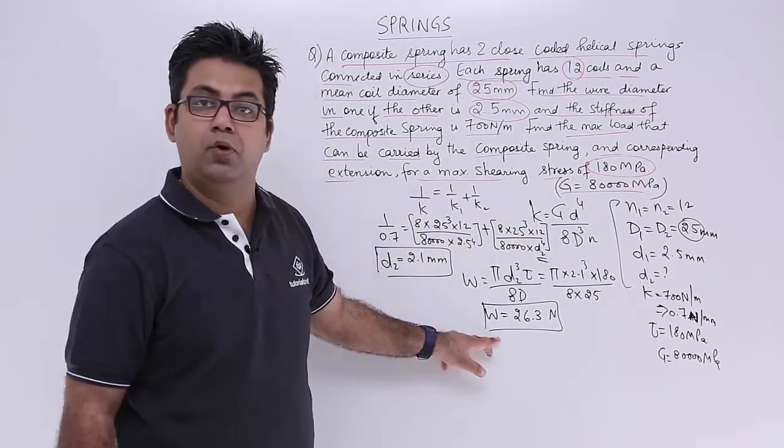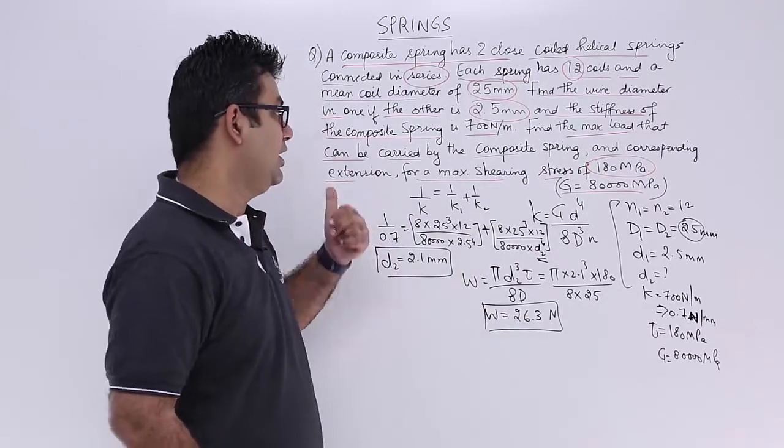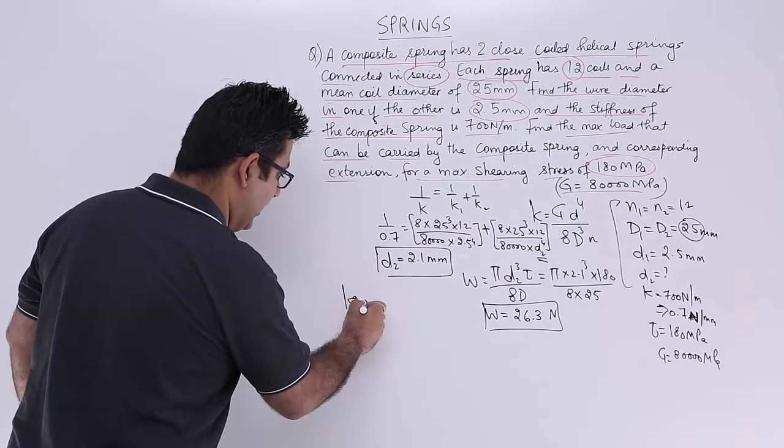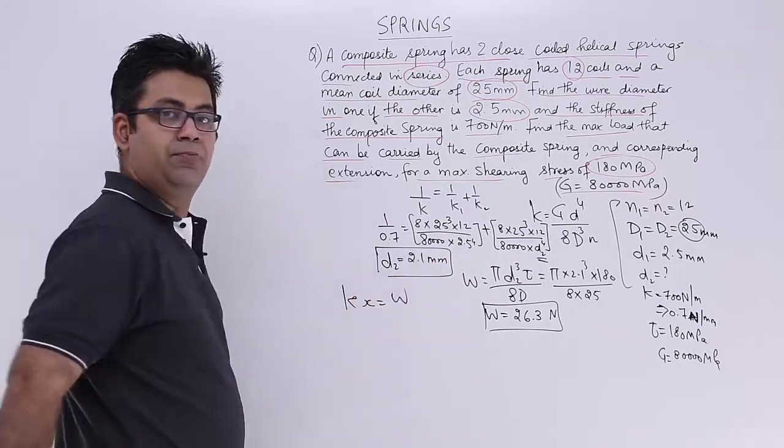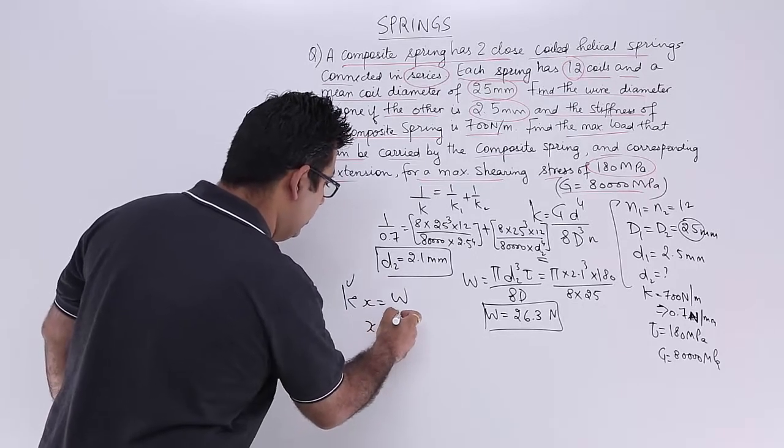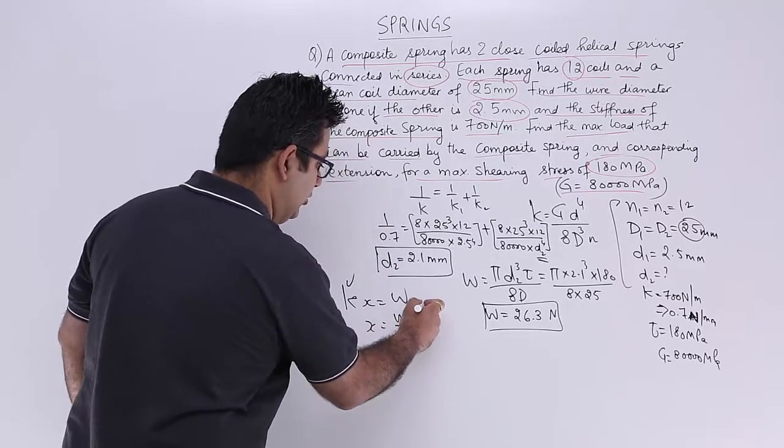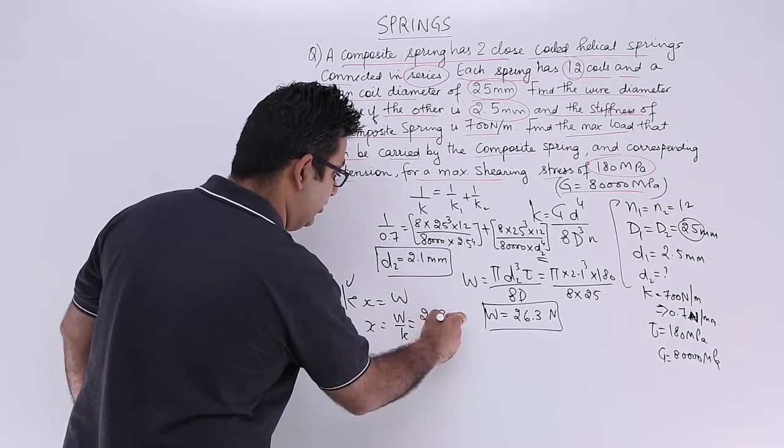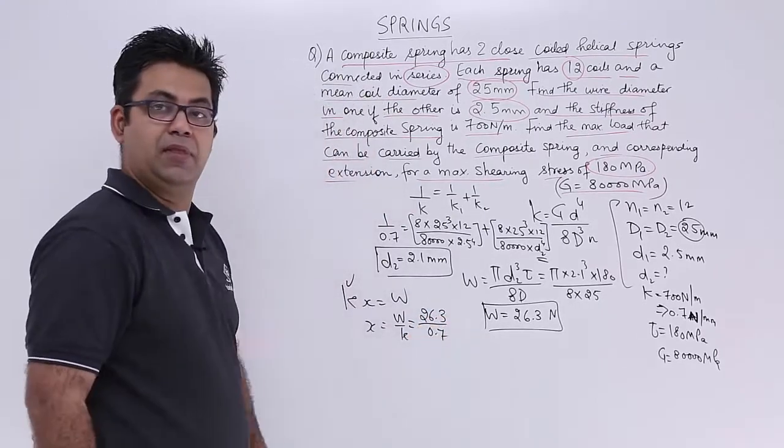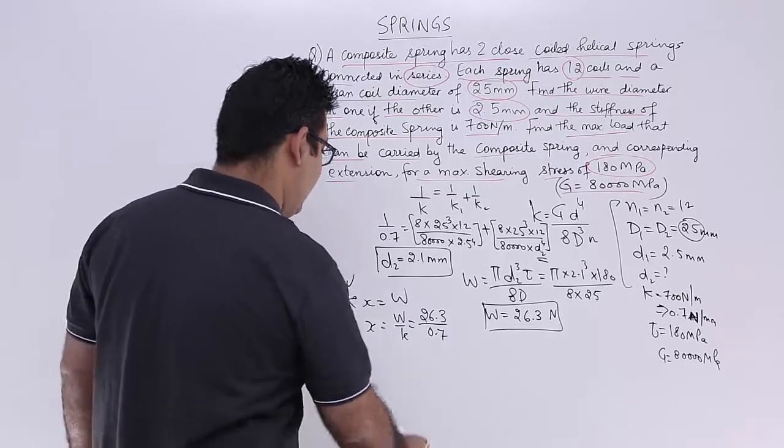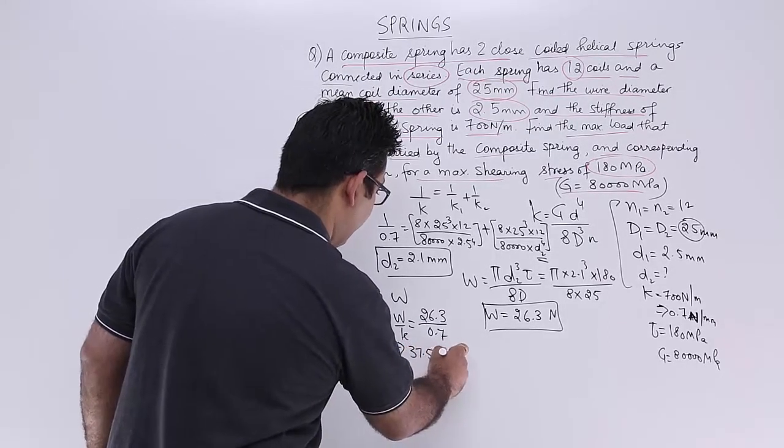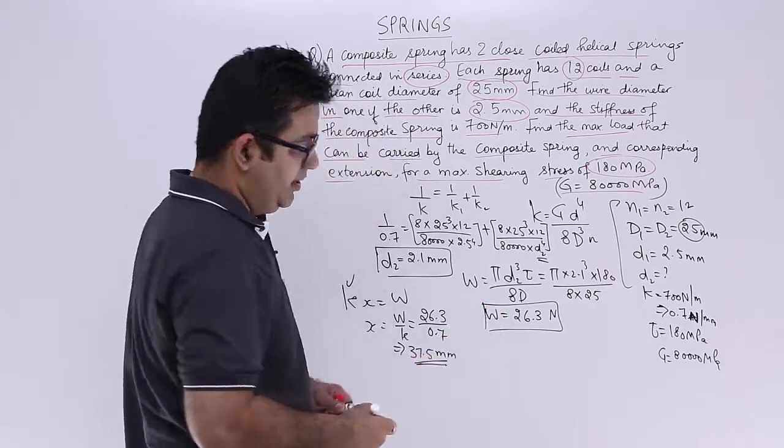Now corresponding to this maximum load, what would be the extension? We know that K times X equals W where K is the stiffness of the composite spring. So X will be equal to W upon K. So 26.3 Newton upon 0.7 Newton per mm will give you an extension of 37.5 mm.